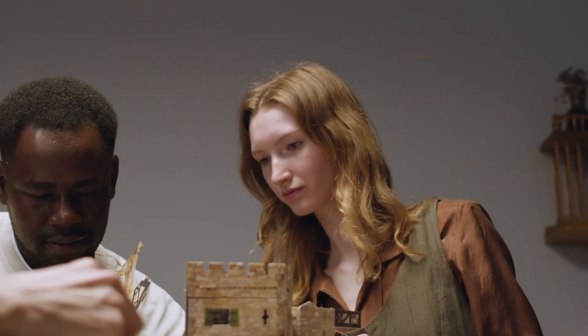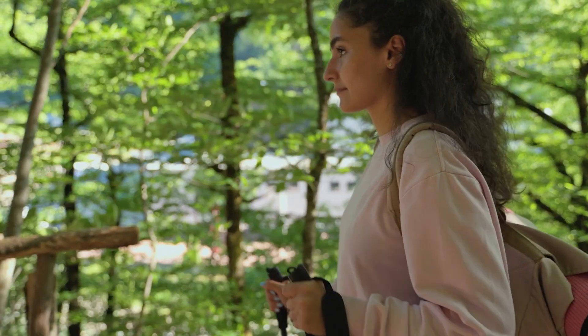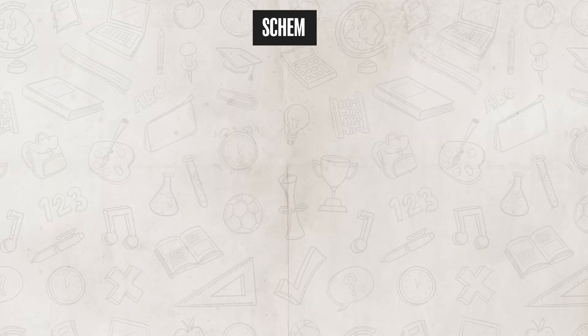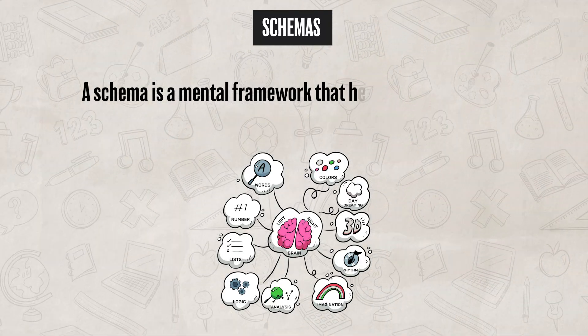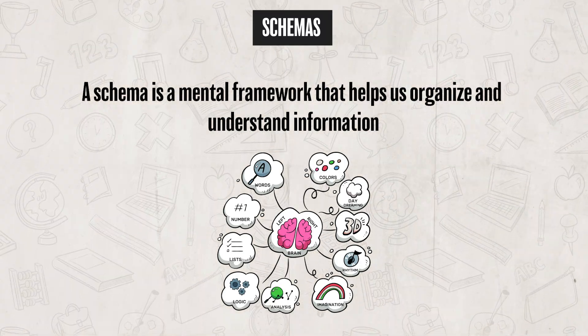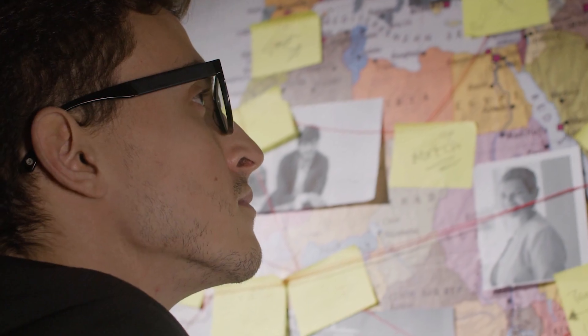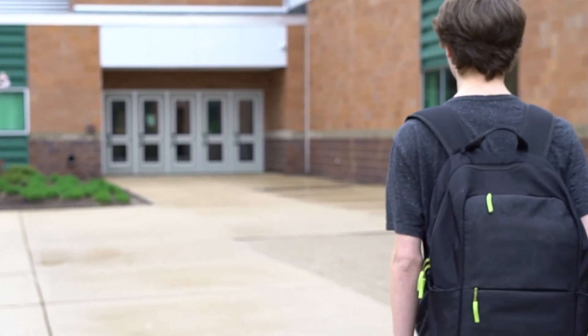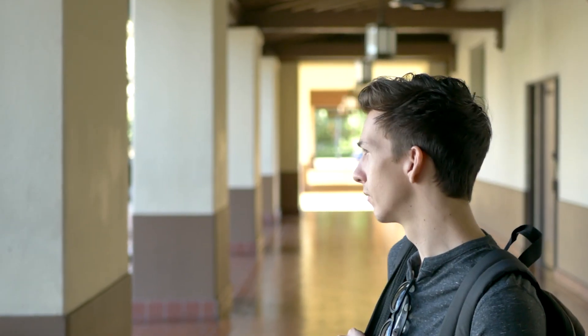Throughout life, we are constantly learning and engaging in new experiences, so it's natural that we change our thinking and understanding of the world around us. To help with understanding all of the information that we take in every day, we use schemas. A schema is a mental framework that helps us organize and understand information — this is what lets us know what to expect in certain situations based on past experiences. For example, you have a schema for school, which probably includes classrooms, teachers, desks, bells, and that amazing cafeteria food. If you transferred to a new school, your brain would use your schema of schools to understand what to expect before you even got there.